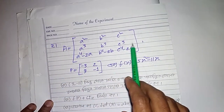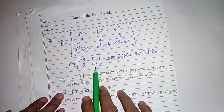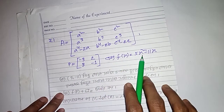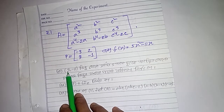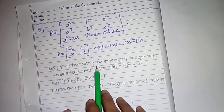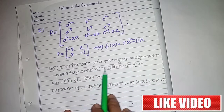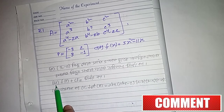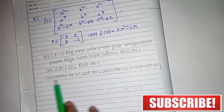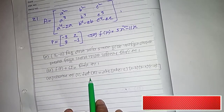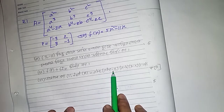A is equal to — matrix P equal to, and f(x) is equal to 5x squared minus 11x. Find f(P) plus 6I₂. The question is A equals A, B, C minus 2.